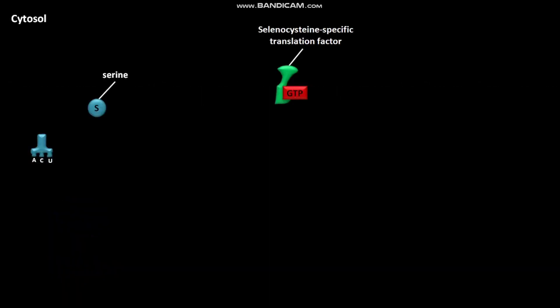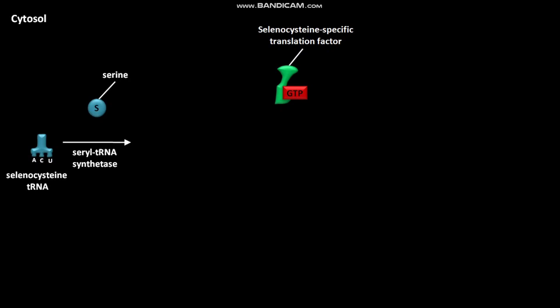In the cytosol of a cell, a special tRNA molecule called selenocysteine tRNA is present. The selenocysteine tRNA, in the presence of serine tRNA synthetase, combines with the serine amino acid and forms a serine-selenocysteine tRNA complex.